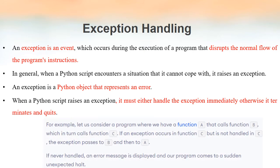Consider three functions: function A, function B, and function C. Function A calls function B and function B calls function C. If an exception occurs in function C, it must be handled by function C. If it is not handled in function C, that exception will be thrown back to function B. If B also cannot handle it, it will be thrown back to function A. If function A is also not able to handle it, then the program will terminate. So whenever an exception is raised it must be immediately handled, otherwise the program will quit.